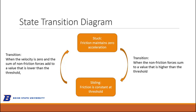This describes how the friction enters into the equations inside the block. Outside the blocks, near the arrows, we describe what the conditions are for transition from one state to the other. On the right-hand side, we make the transition from stuck to sliding when the sum of all non-friction forces comes to a value higher than the maximum friction force.